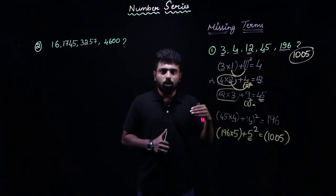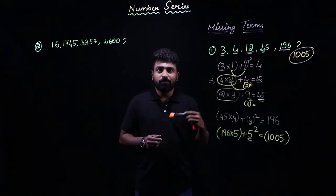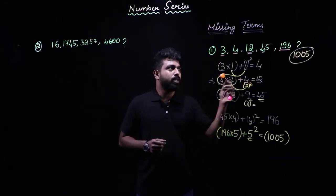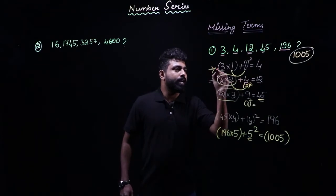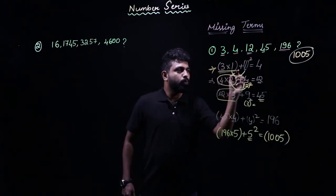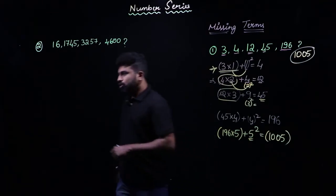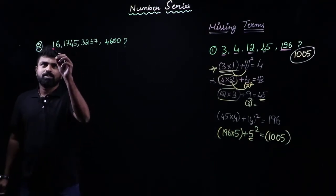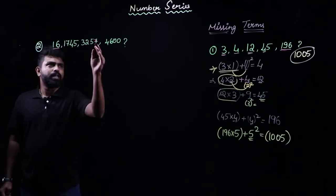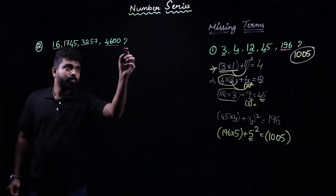So when the logic gets complicated, there must be different ways or different angles in which you need to think so that you can write down the logic correctly. Let us move on to our next example. The first term here is 16, it increases to become 4600, and there is also a missing term.